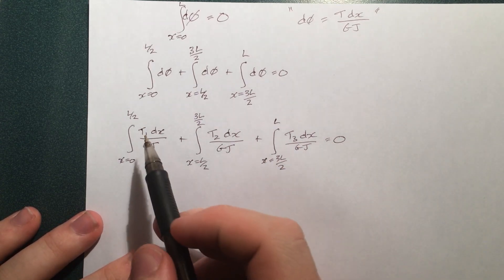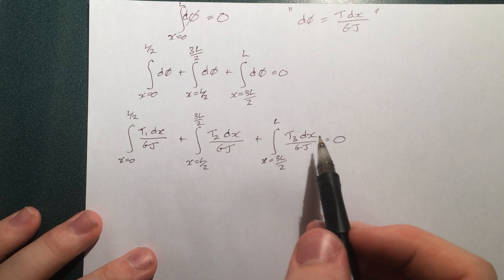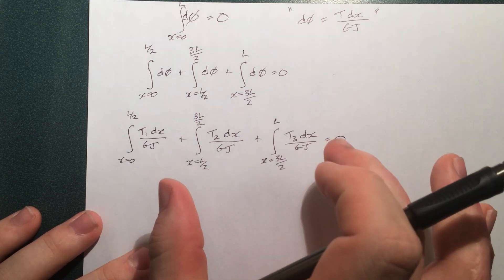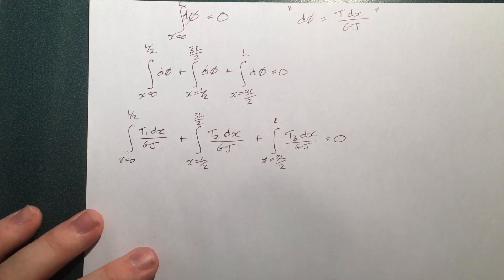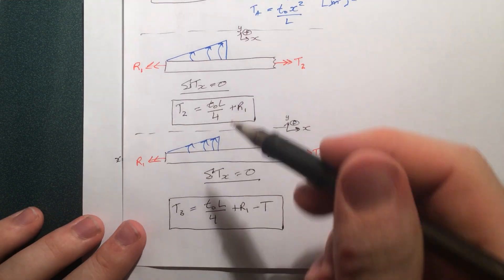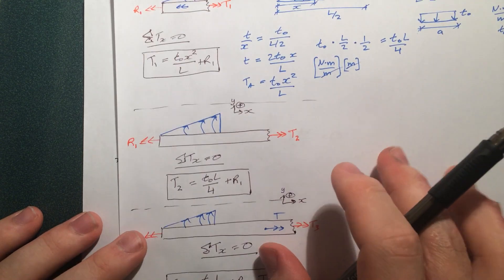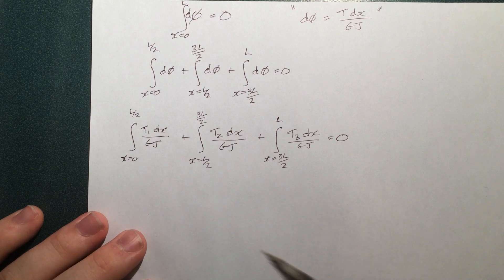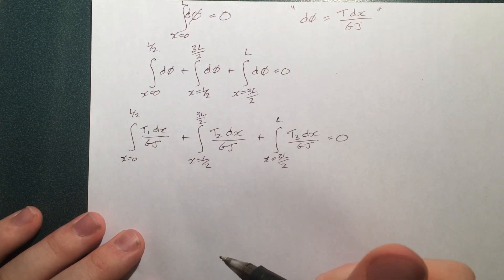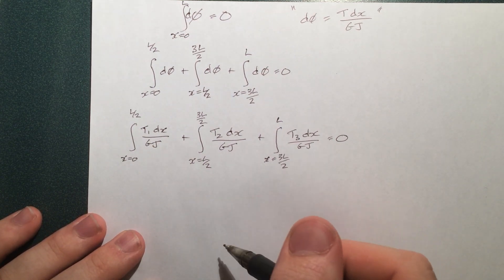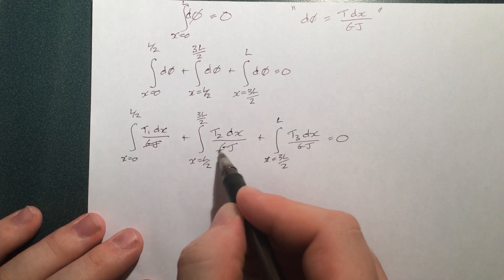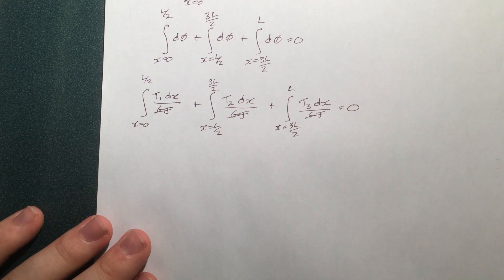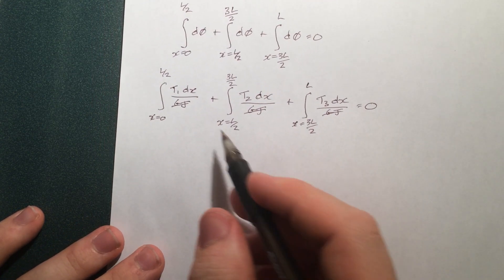And of course, we know t1, t2, t3, but we have it in terms of r1. That's okay. We sub it in. The only thing we don't know is r1. We can solve for r1. Once we have r1, we go back and we plug it into all these equations in terms of r1, and we'll know all the internal torques, and then we can plot them. Also note here, GJ is the same for each case. The material is constant. The cross-sectional diameter is constant. So if you factor all these out, and of course a 0 makes that go to nothing.